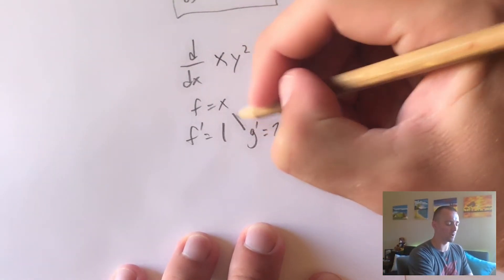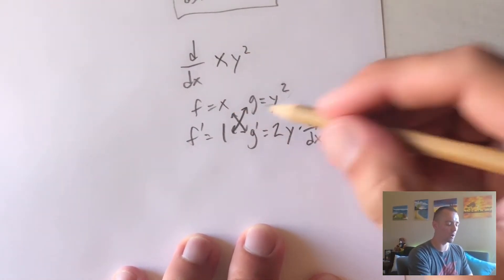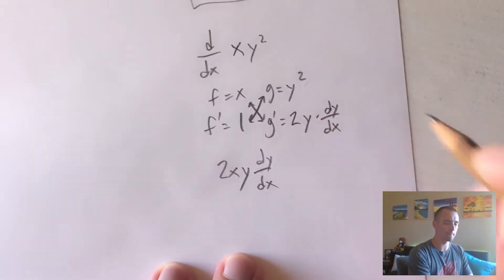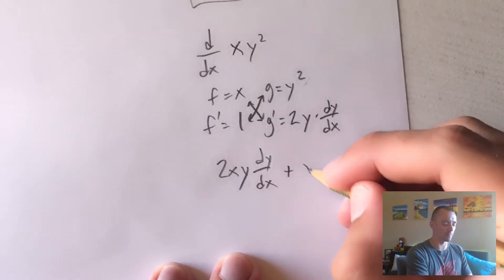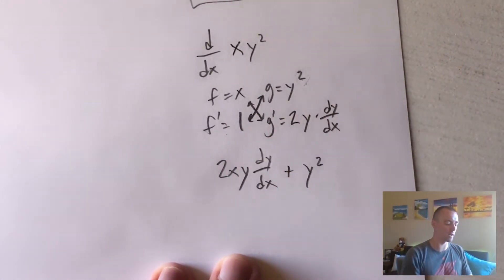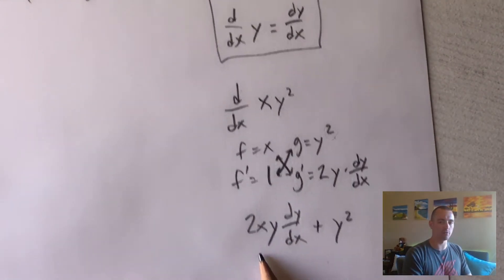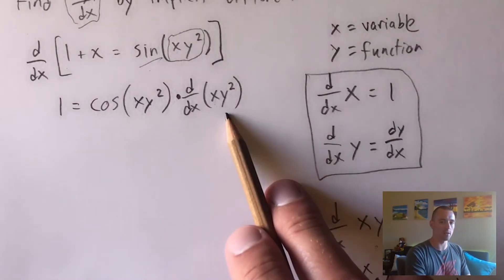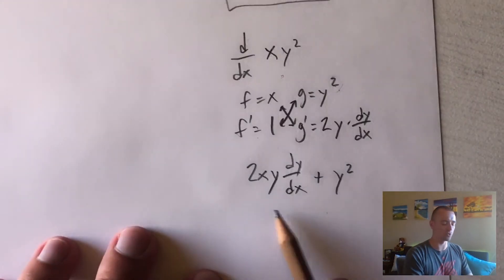Product rule says f times g prime plus f prime times g. So we get x times 2y dy/dx, plus one times y squared, which is just y squared. This is the derivative of x times y squared. Now we replace that piece in our equation with this derivative we just found.